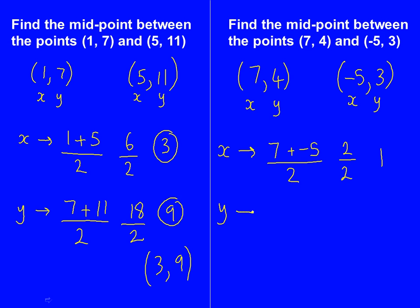Now the y coordinate. We've got 4 and we've got 3. And we're going to add them up and divide by 2. So 4, add 3 is 7. Divided by 2 is 3.5.